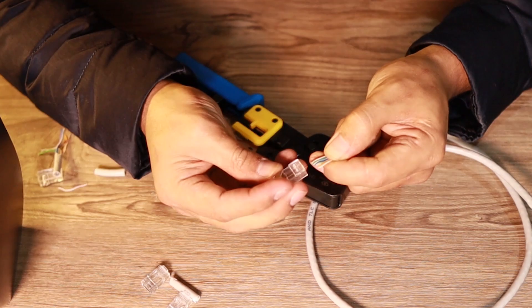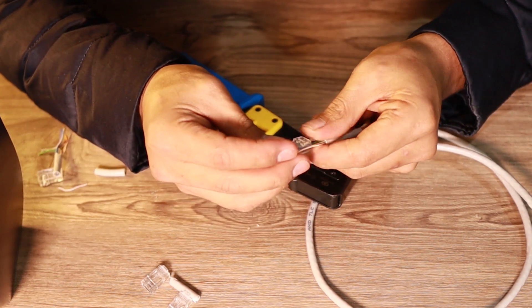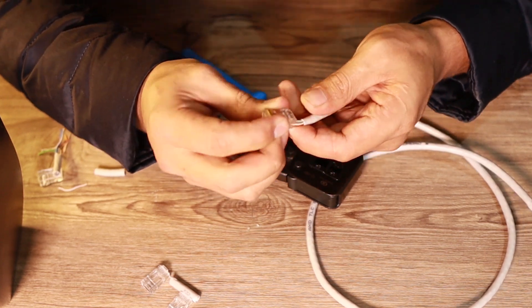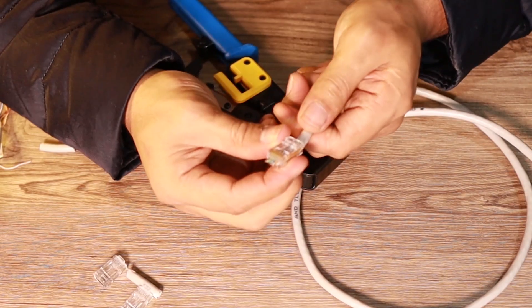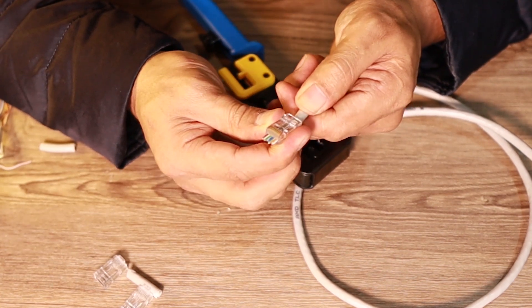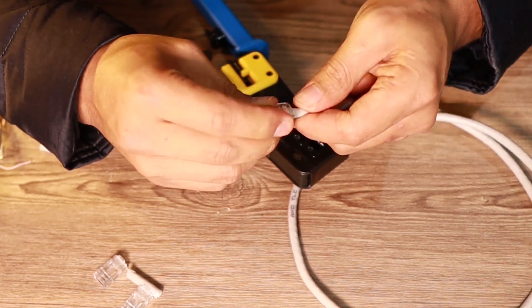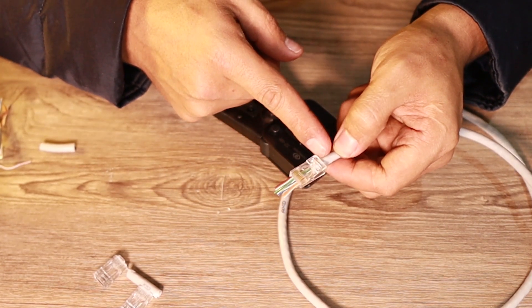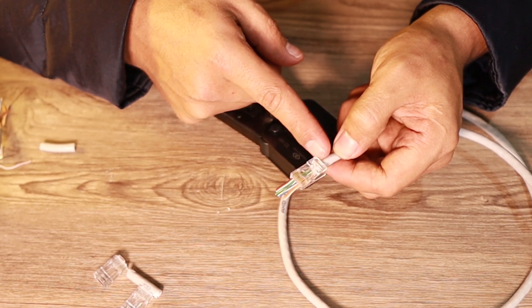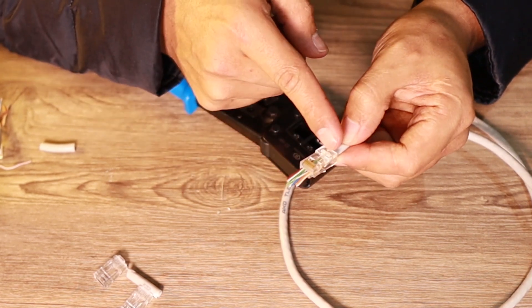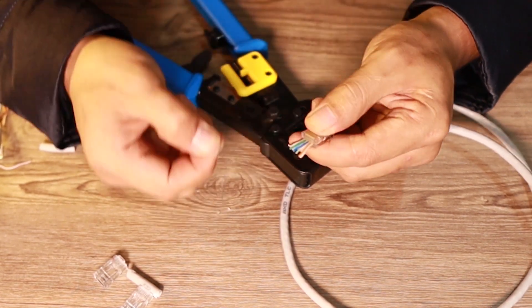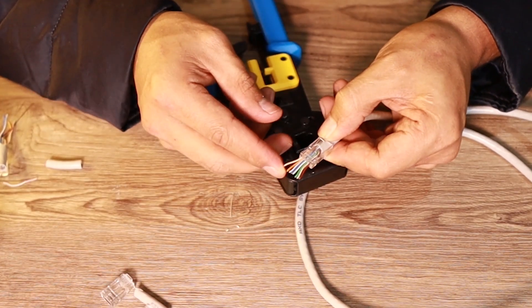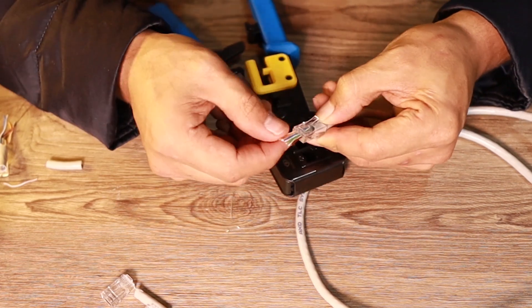Now if you are going to use this RJ45 you basically just push this one then you can see that the copper wires are going to go out so you can adjust this cover. It's going to go up here so you will have all the adjustment. That's why it's called pass-through. This one you need to have a pass-through RJ45 so that these copper wires can go out.